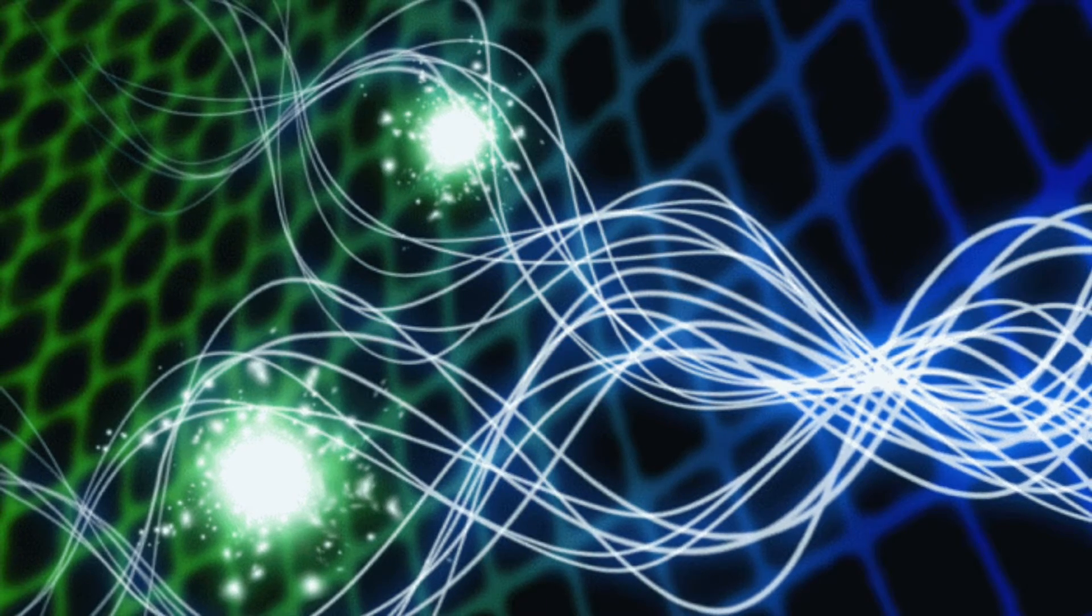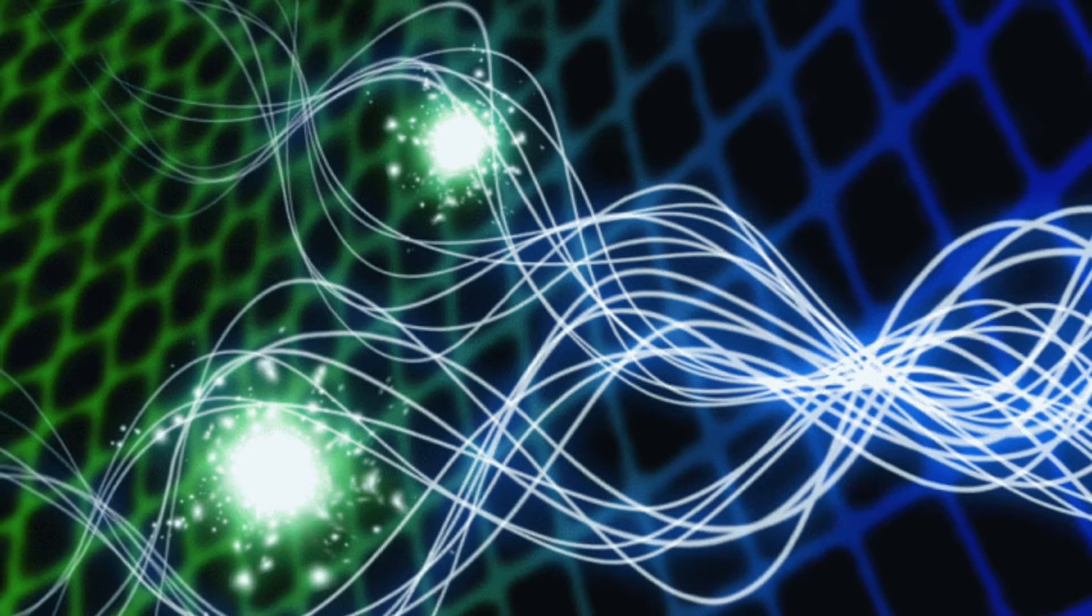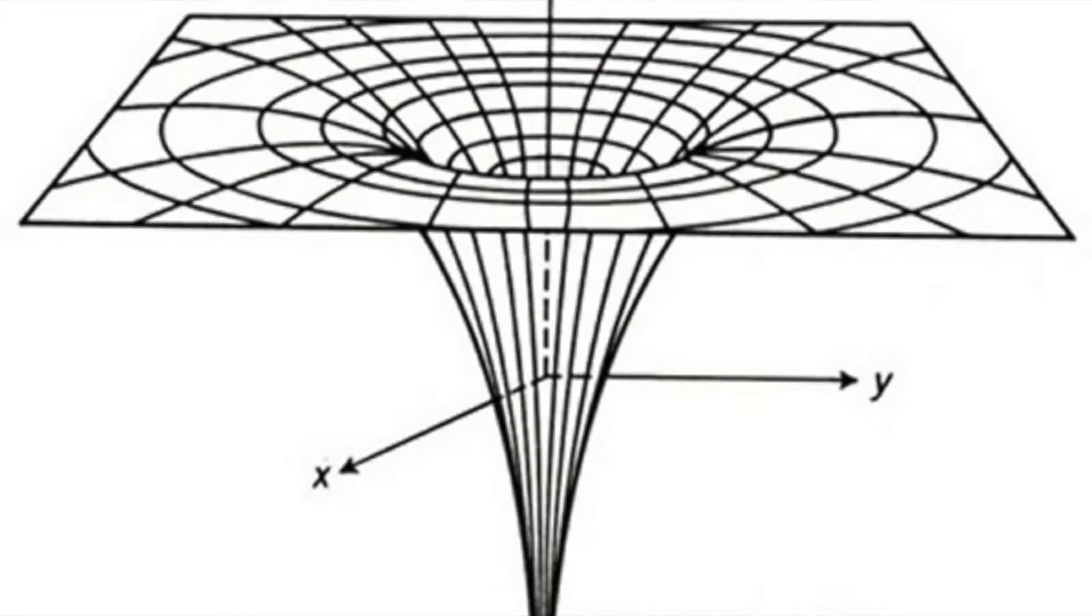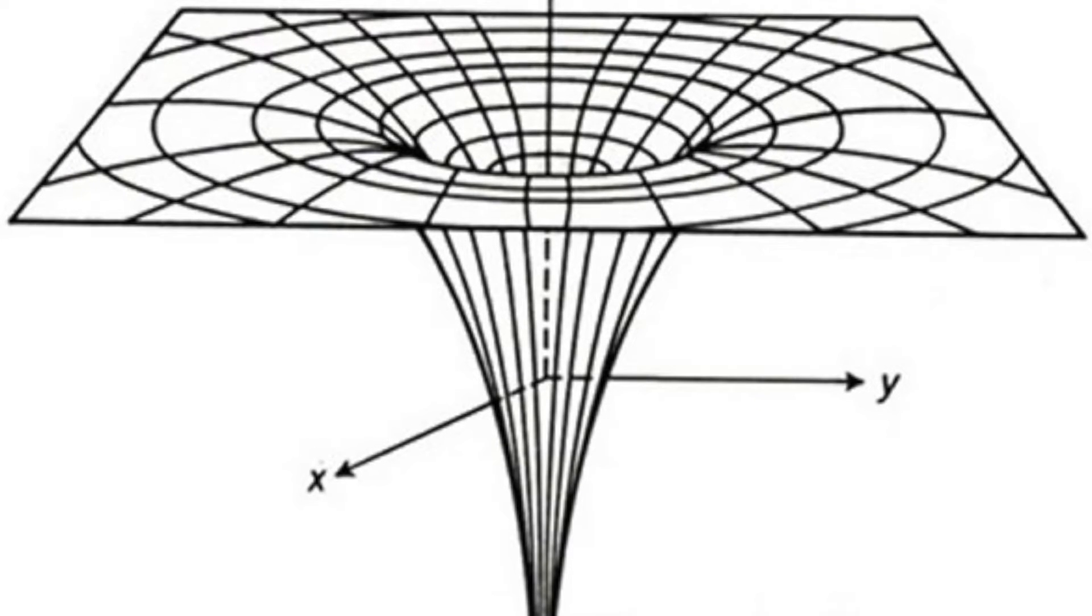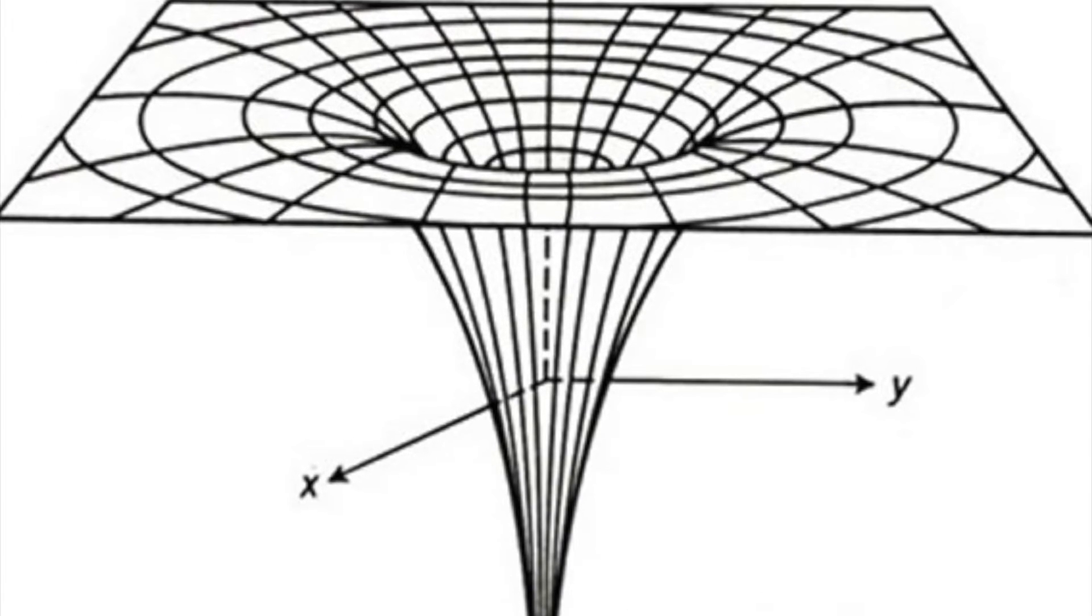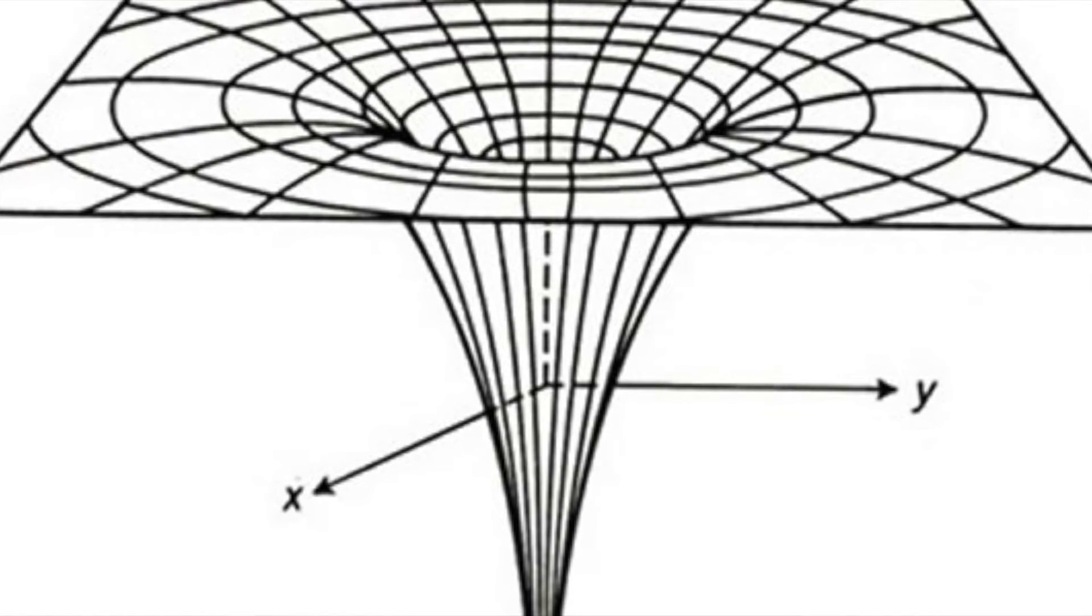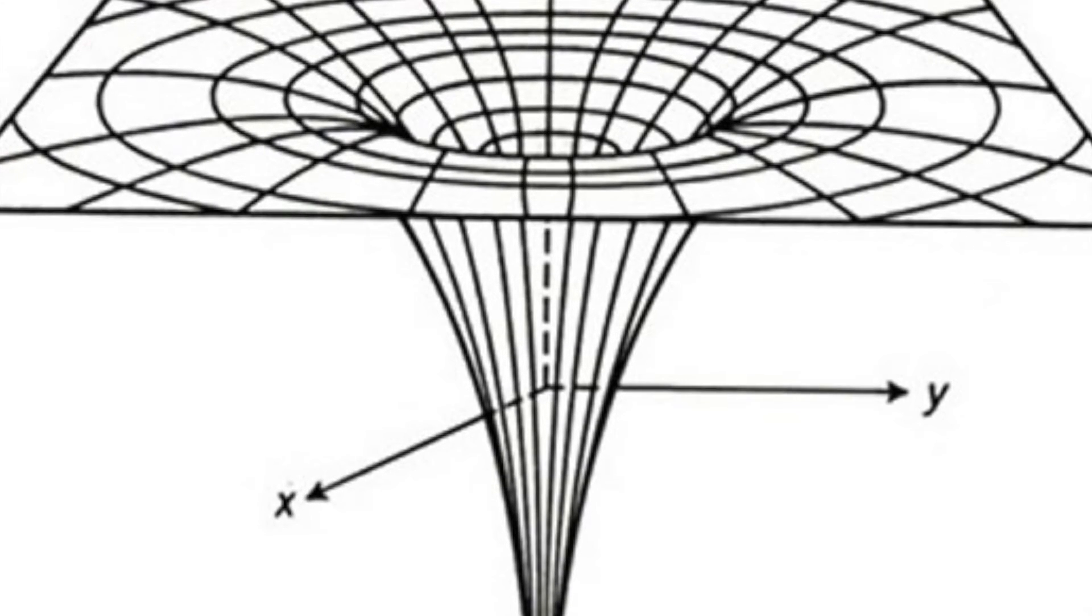The process involves figuring out how to perform quantum mechanical calculations in curved spacetime. This is basically quantum field theory. This gives us a result that is essentially impossible to test with our experiments and technology.